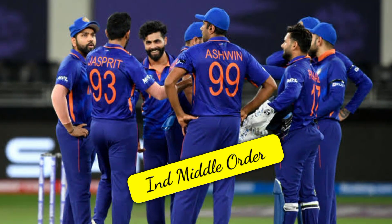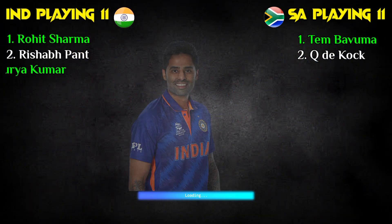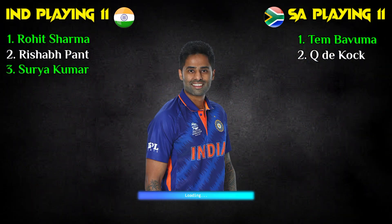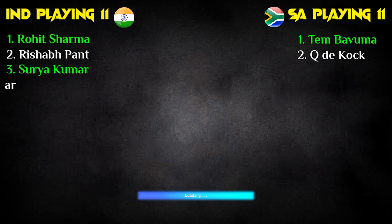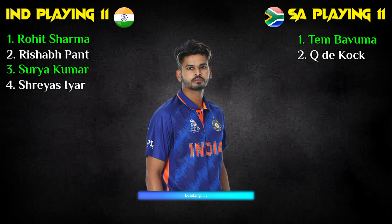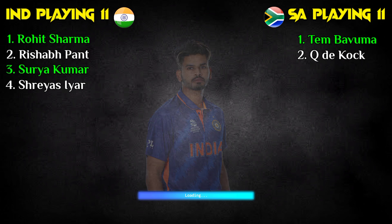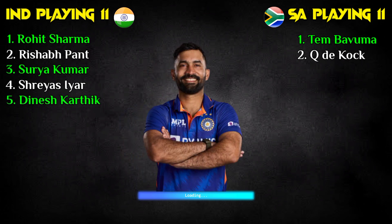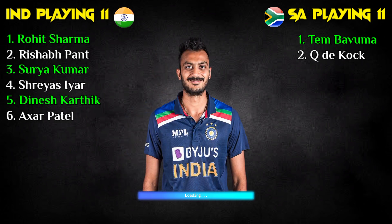India team middle order. Number 3 Suryakumar Yadav, right-handed batsman. Number 4 Shreyas Iyer, right-handed batsman. Number 5 Dinesh Karthik, right-handed batsman. Number 6 Axar Patel, all-rounder.